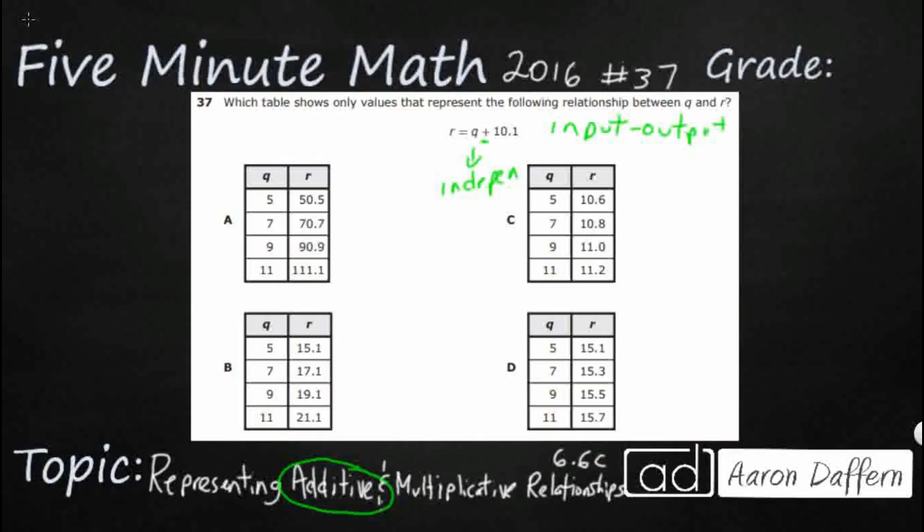So our independent variable is where you start, something gets done to that, and you end up with your answer. Or in this case, we end up with our dependent variable. So this variable r depends on what we do to q. And in this case, we are adding. So that is our additive relationship.